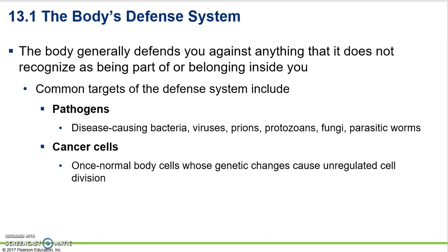The immune system is not so much an organ system as a functional system. You'll find immune cells in all of your different body systems working to protect you from pathogens — external disease-causing agents that have been taken in by your body — and then cancer cells, your own cells who have stopped undergoing regular cell division and go through it dramatically unregulated.